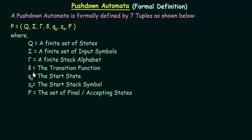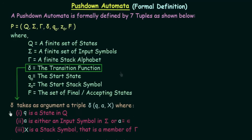Now we need to talk about the transition function denoted by delta. The transition function takes as arguments a triple: Q, A, and X. Let us see what these three arguments mean.